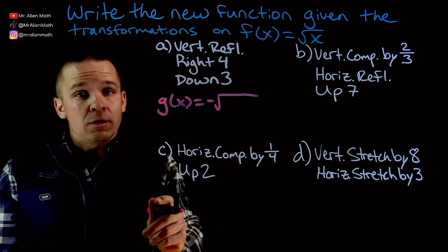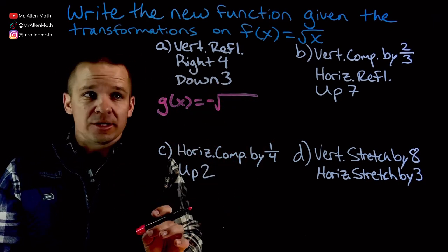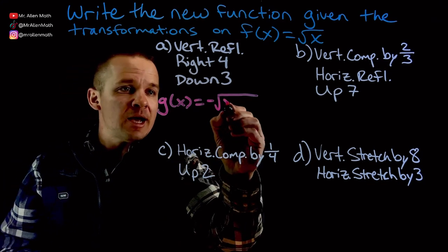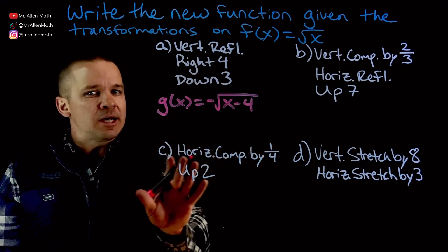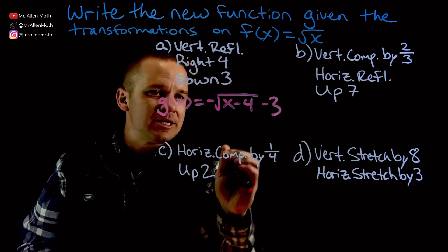We've got to go to the right 4. Now on the inside, we've got to think opposite. So it's not going to be x plus 4, it's going to be x minus 4. And then we have down 3 outside, so we've got minus 3 on the outside.